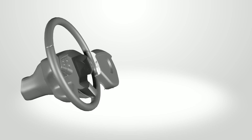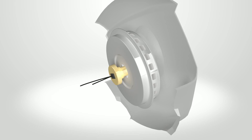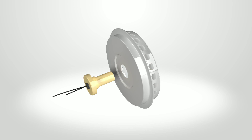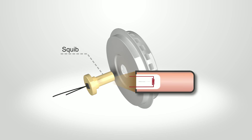An airbag is inflated by the rapid expansion of gas. This gas is fired by an igniter, more commonly called a squib.